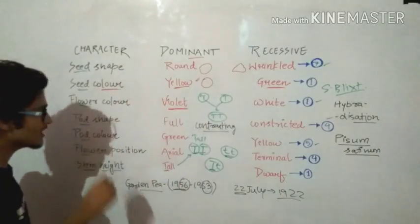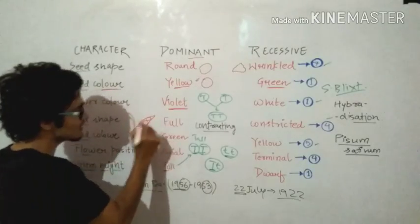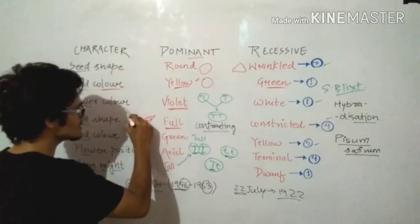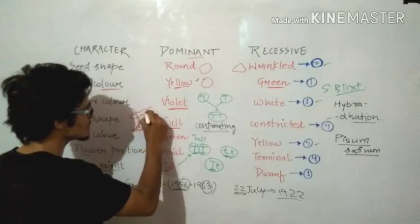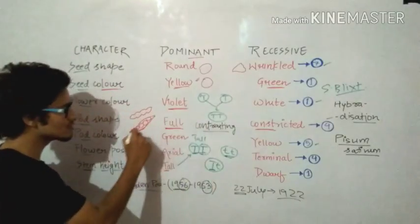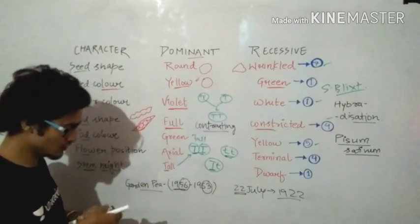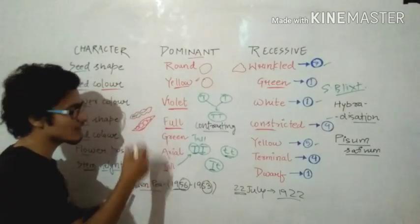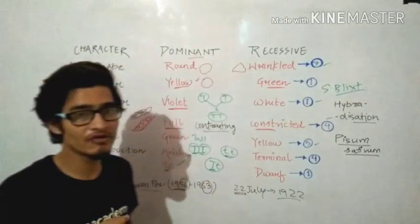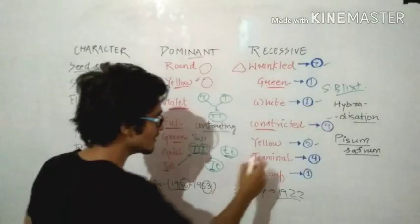There are two types of flower colors: one is white and the second one is violet. Obviously we can say that white one is going to be the recessive and violet one will be the dominating one. After that, pod shape. What is pod? This is known as pod. So it is full, there are no ridges present over here, but in some cases it is constricted like this. So it is full, and the recessive one is constricted because most of the pods are full, right?